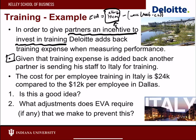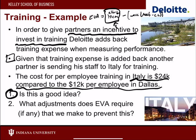But knowing training gets added back to income, what if a partner says: if we're going to add it back anyway, instead of sending employees to Deloitte University for twelve thousand dollars, I'll send them to Italy for twenty-four thousand dollars and have a big party? They think it won't impact income at all. At the firm level, this is a bad idea — they're probably getting the same or less training in Italy, and it doubles the cost.